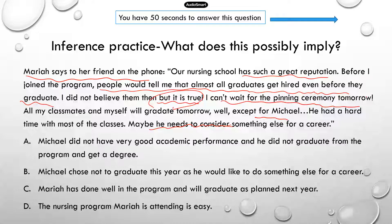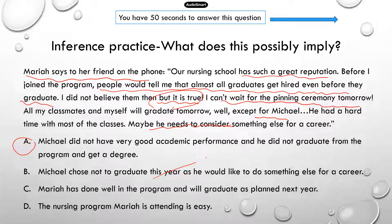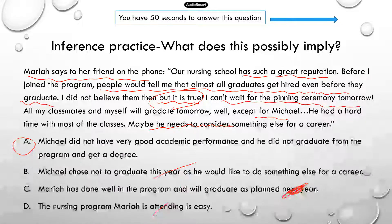A is the correct answer. Option B says Michael chose not to graduate this year as he would like to do something else for a career — that doesn't seem right, because it doesn't look like Michael had any freedom to choose not to graduate; he simply did not do very well academically, so he could not graduate. Option C says Mariah will graduate next year — it should be this year, so that's a tricky part. Option D says the nursing program is easy — even though almost all students graduate and got hired, that doesn't imply the program is easy; maybe everybody just studies really hard.